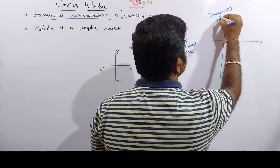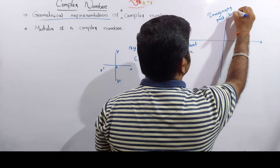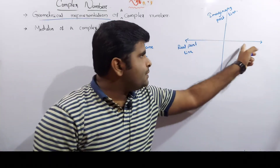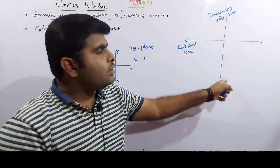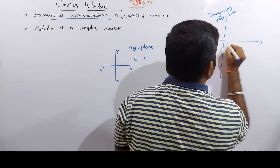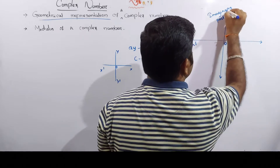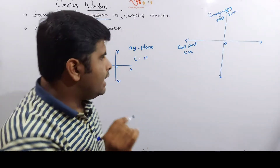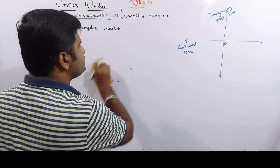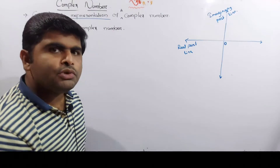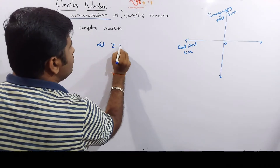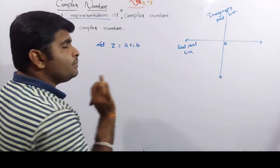The imaginary part line is at 90 degrees. If you want to represent this line, it is the real part line. What you want to represent on this line is the imaginary part of the complex number. If you give your origin, then you can see it. Now if you want to define the complex number, let z equal to a plus ib be a complex number.